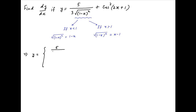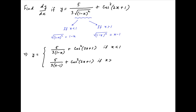y equals 5/3·(1-x) + cos²(2x+1) if x is less than 1, and y equals 5/3·(x-1) + cos²(2x+1) if x is greater than 1. Therefore, we compute the derivative of y with respect to x in each case.